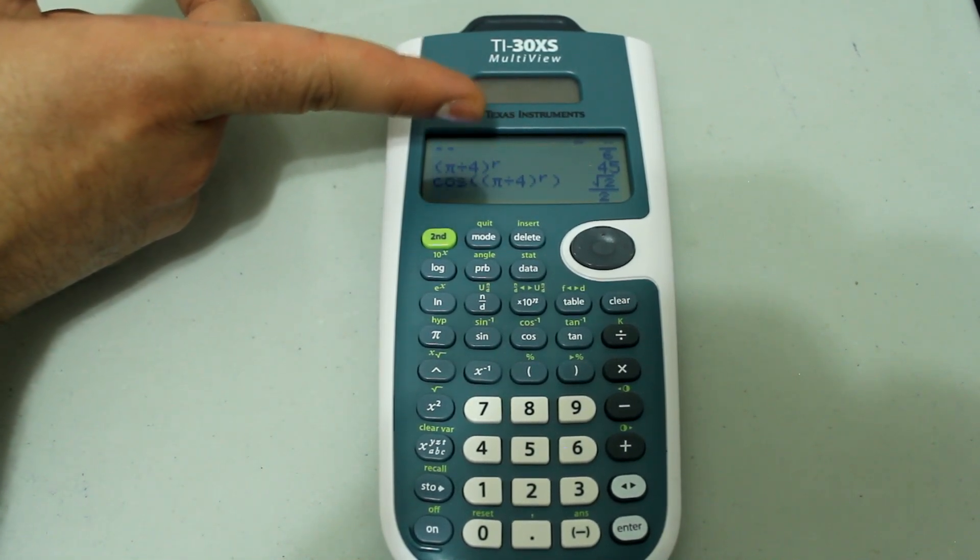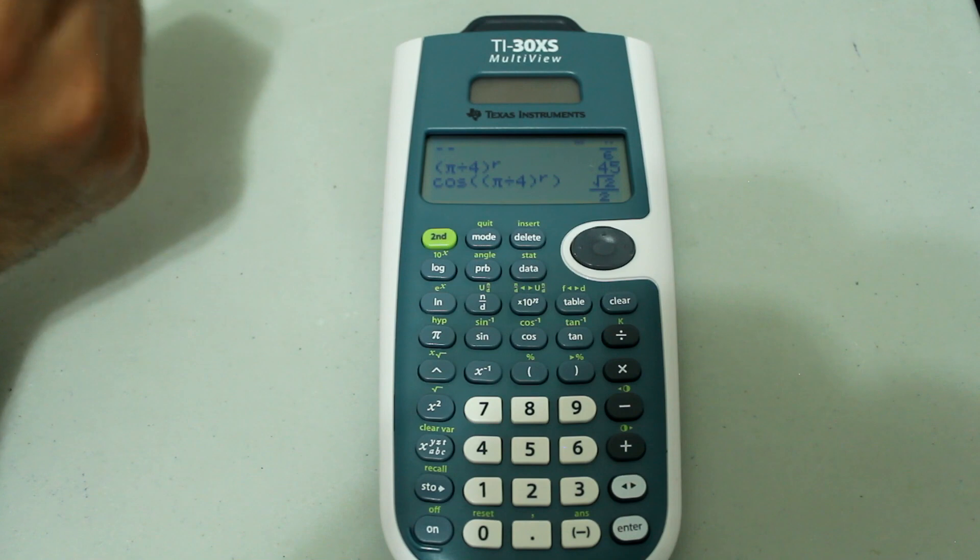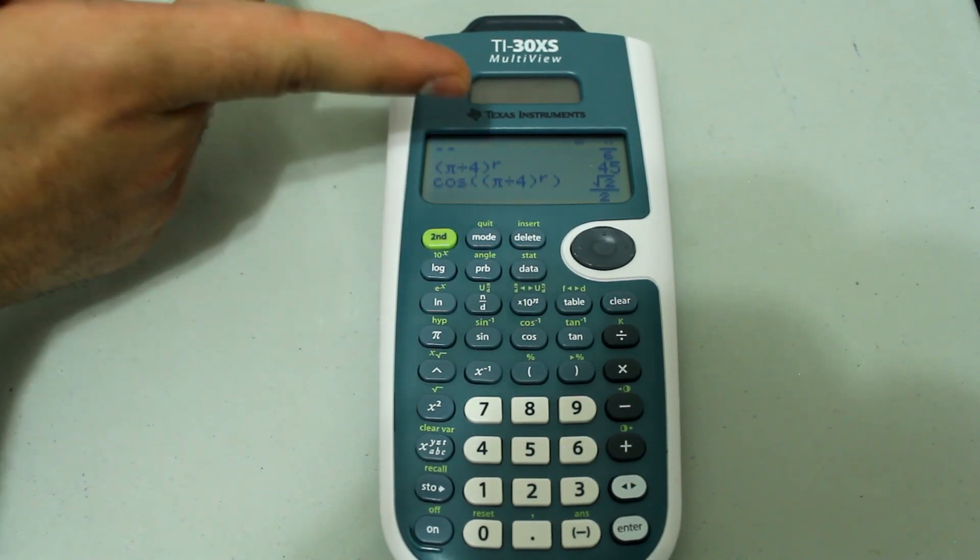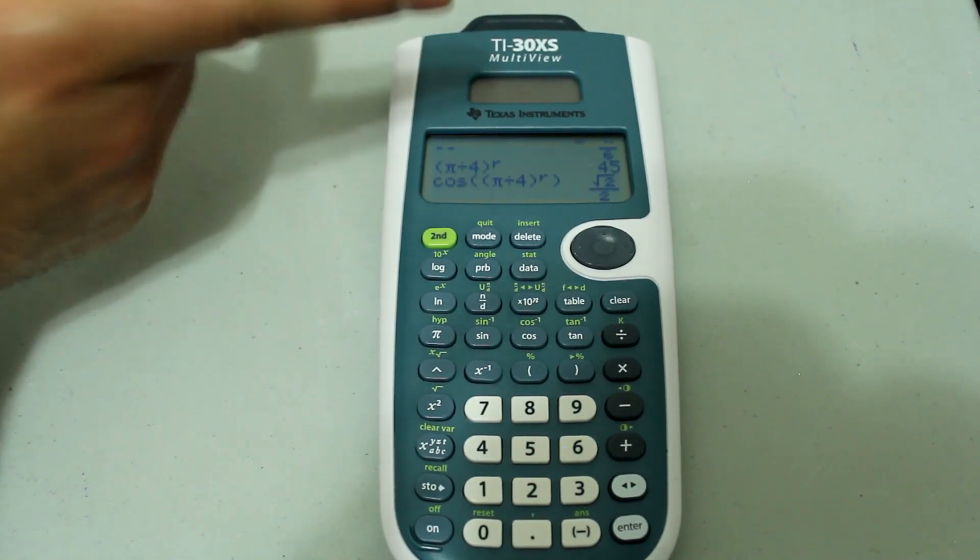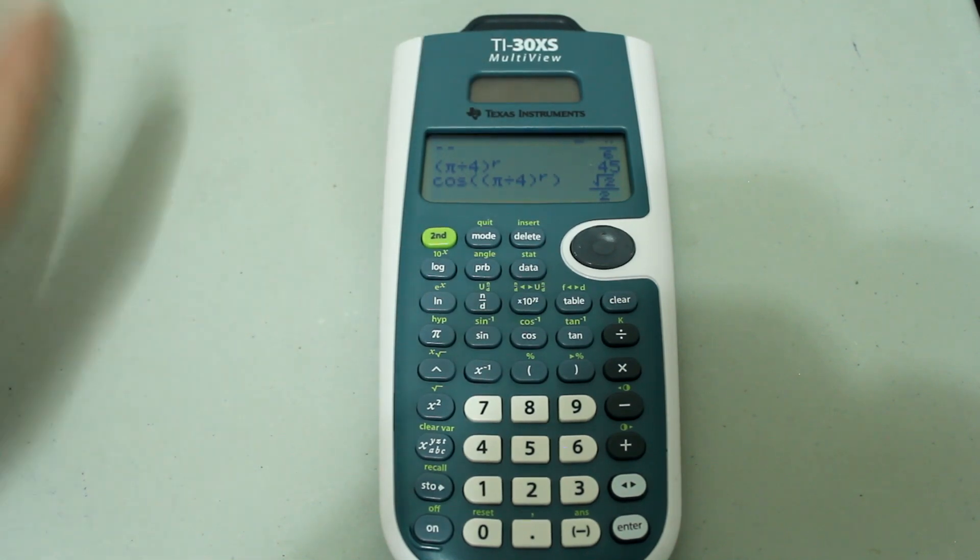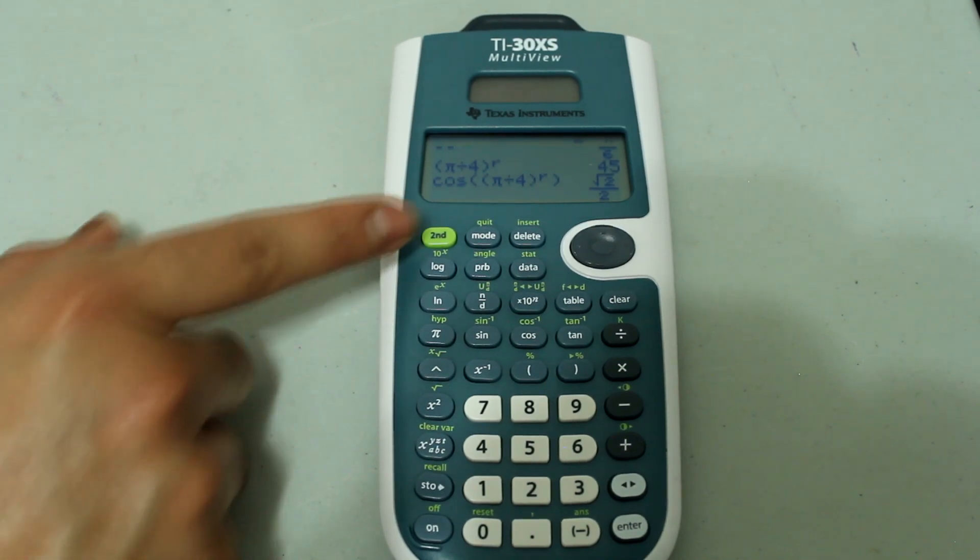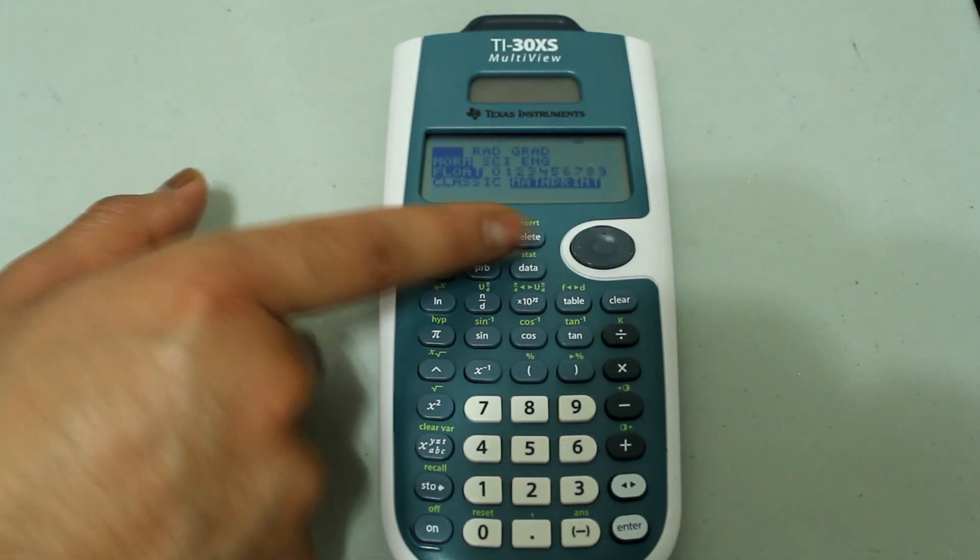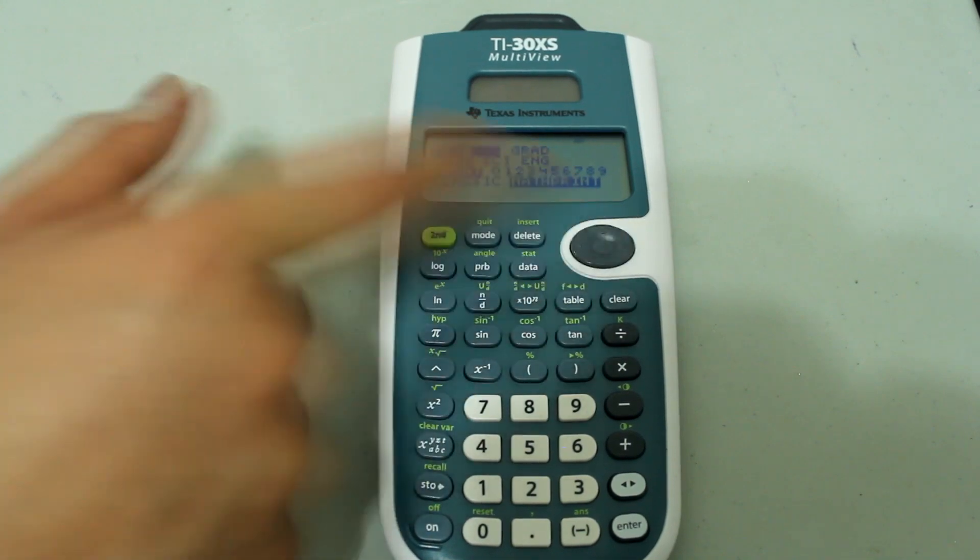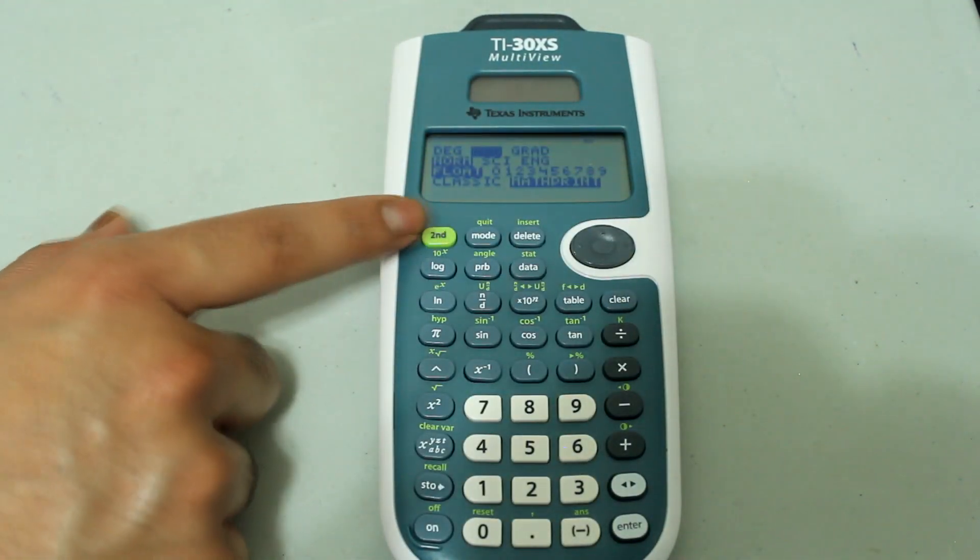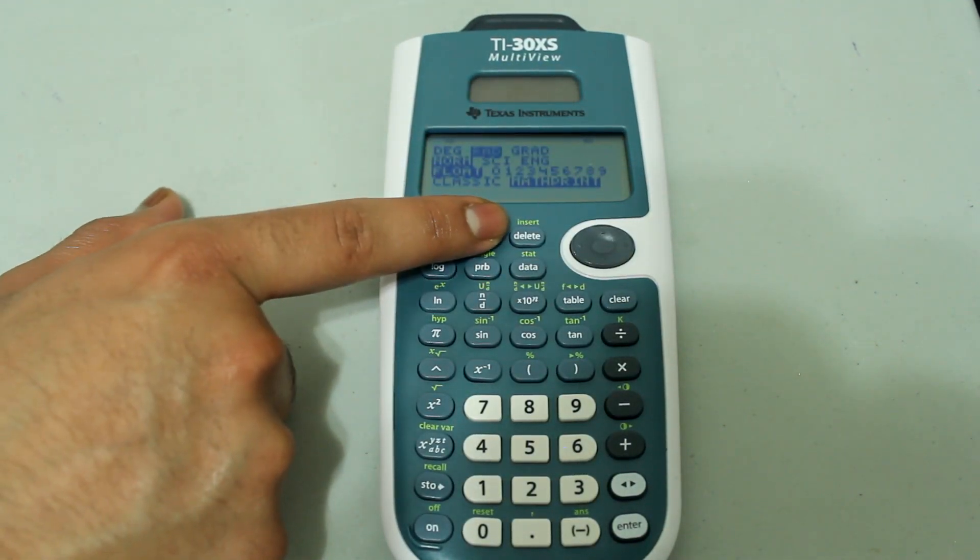But I had to specify that the entry was in radians. Similarly, if you wanted to do it for degrees in radian mode, that process is quite similar. So let's go back to mode and switch it to radians. Let's hit second, mode to quit.